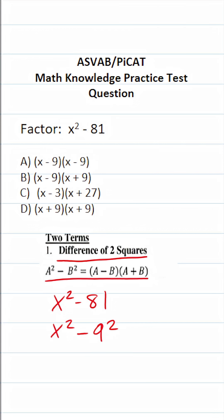And if you look right here, which is something I took from the factoring guide from my free reference sheet on my website asvabapp.com, you can see that this is simply going to be x minus 9 times x plus 9.